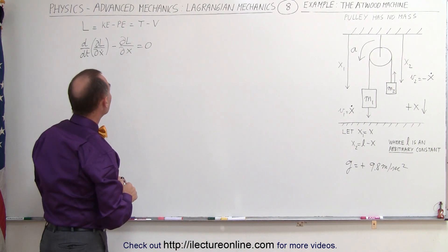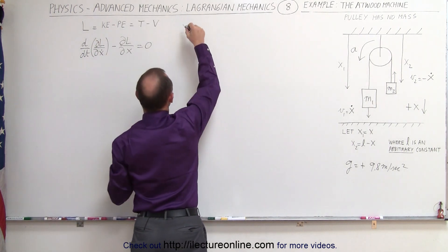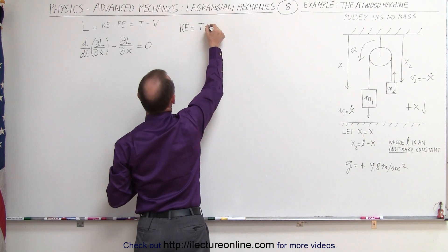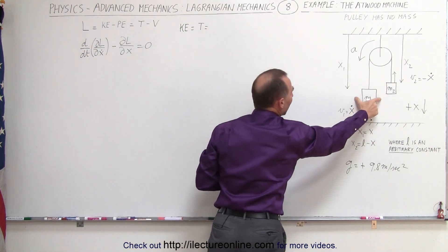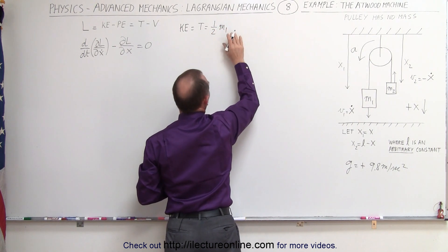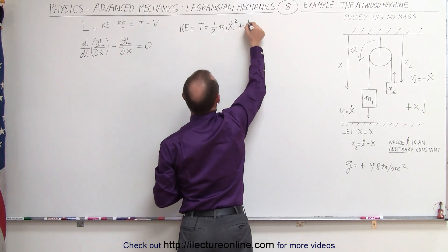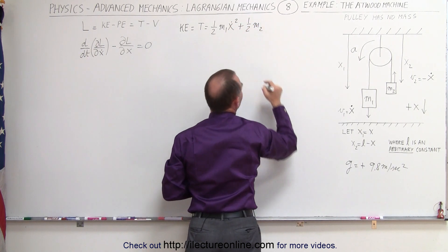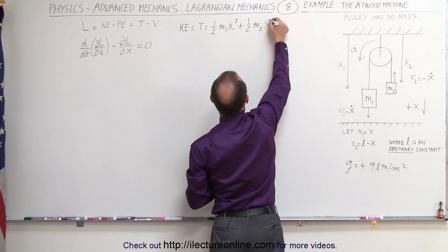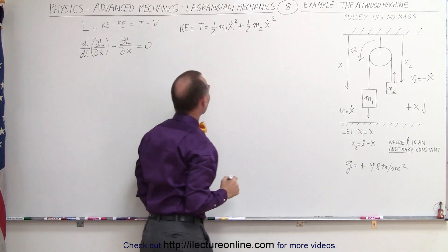Now let's find the Lagrangian, which means we need to find the kinetic energy T. The kinetic energy is equal to one-half m1 times v1 squared, where v1 is x-dot, so one-half m1 x-dot squared, plus one-half m2 times negative x-dot squared, which also gives plus x-dot squared because when squared we get rid of the negative sign.